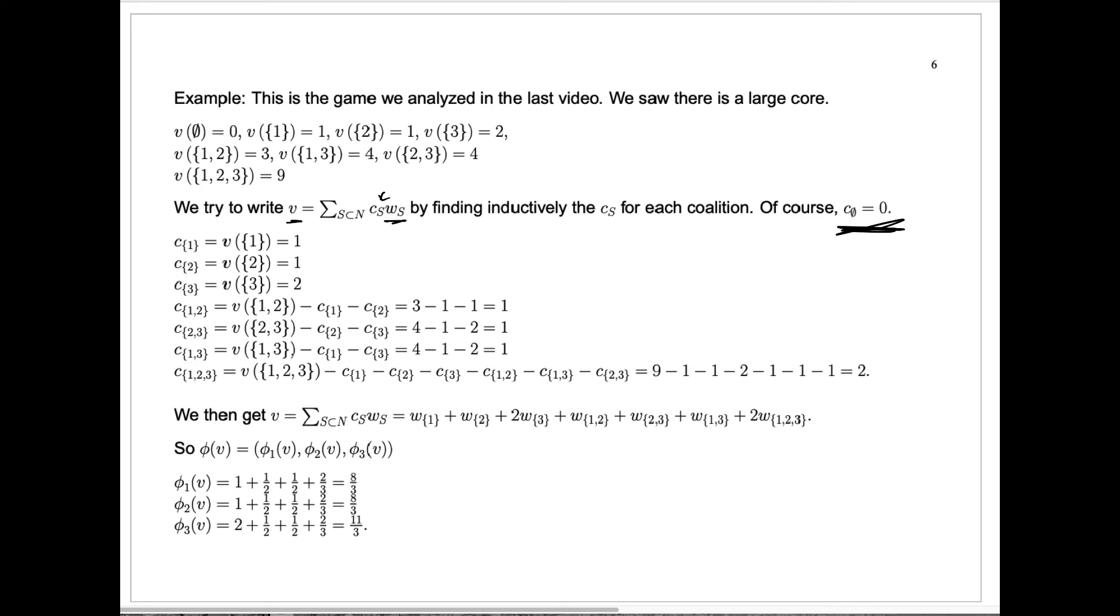The value for the set one, three minus the constant for one, minus the constant for that singleton set three. That's four minus one minus two, which is also one.